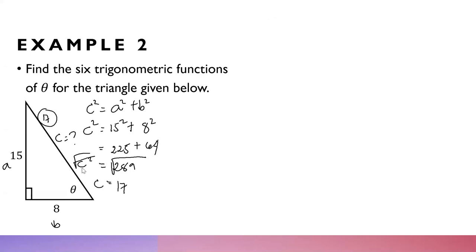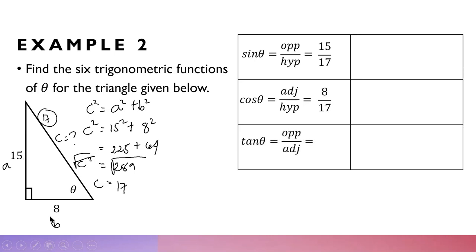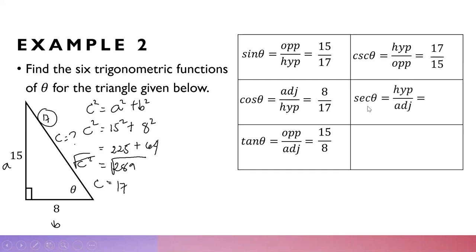Let us find the six trigonometric functions of this right triangle. Sine is opposite over hypotenuse: the opposite is 15 and the hypotenuse is 17, so sine theta equals 15 over 17. Cosine is adjacent over hypotenuse: 8 over 17. Tangent is opposite over adjacent: 15 over 8. Cosecant is hypotenuse over opposite: 17 over 15. Secant is hypotenuse over adjacent — the reciprocal of cosine — so 17 over 8. And cotangent is adjacent over opposite: 8 over 15.